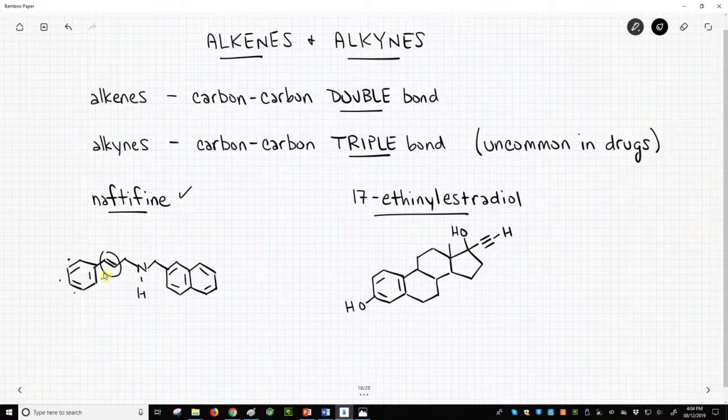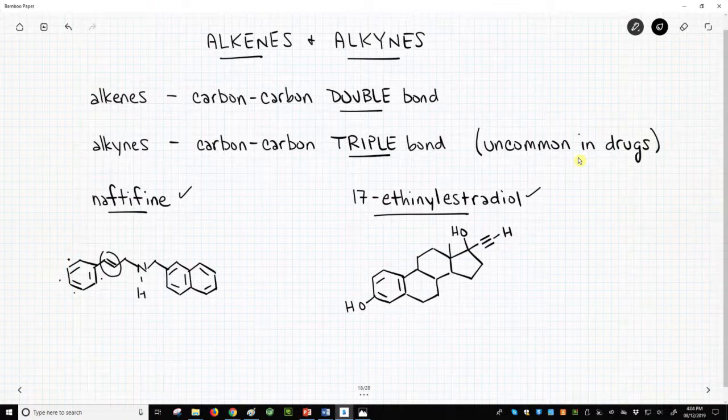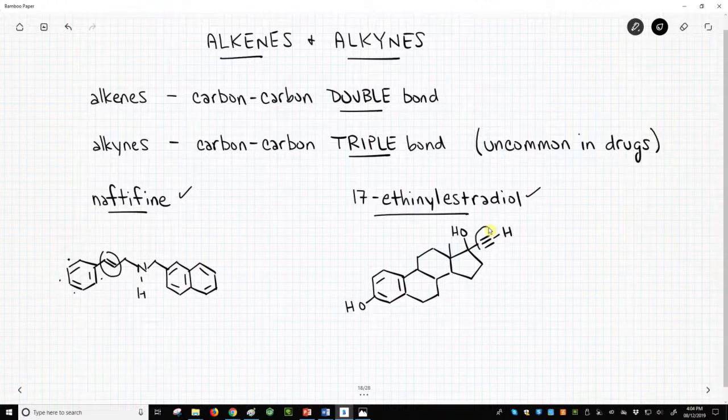17-ethynylestradiol is our second drug, and it is a type of oral female contraception. This molecule contains a carbon-carbon triple bond. This is an alkyne.